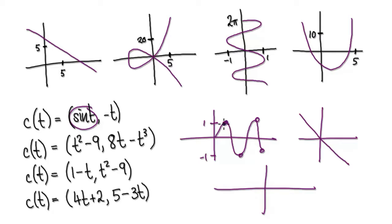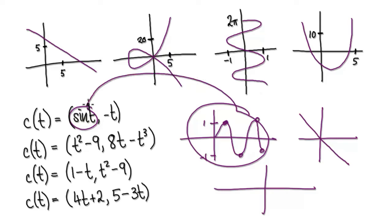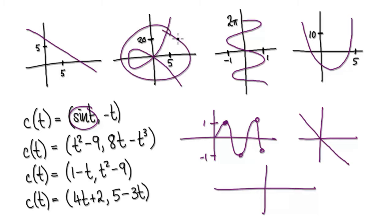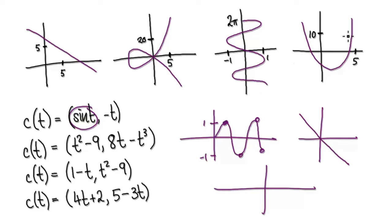So bear that in mind. When you look at this graph, it's telling you in the x direction you're just going to oscillate back and forth between 1 and negative 1. So looking at these graphs, you should look for something that oscillates back and forth between negative 1 and 1.